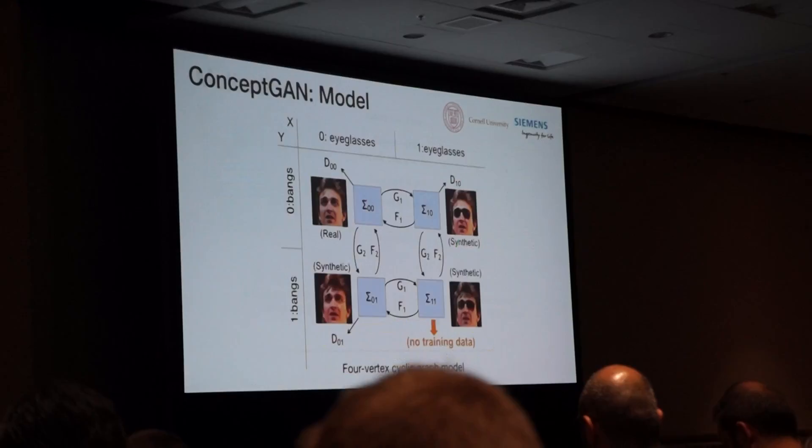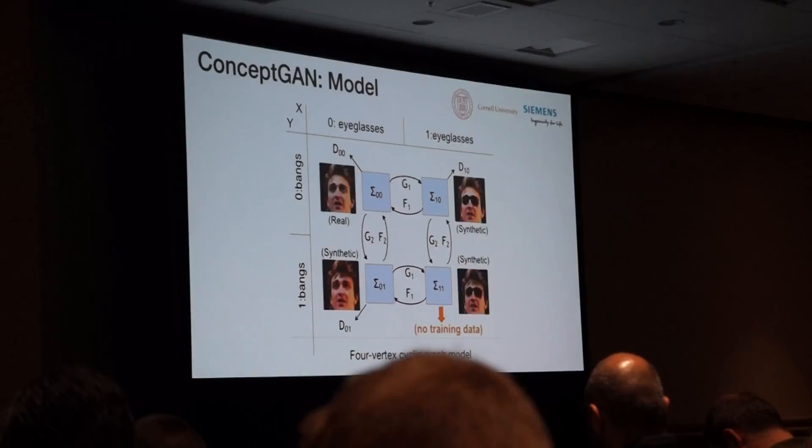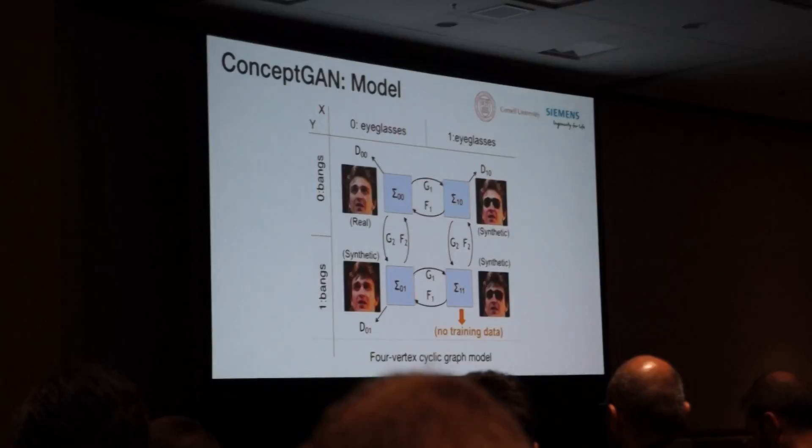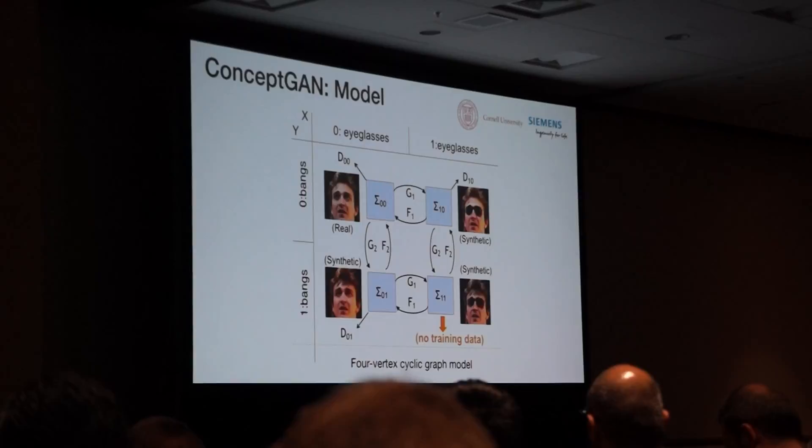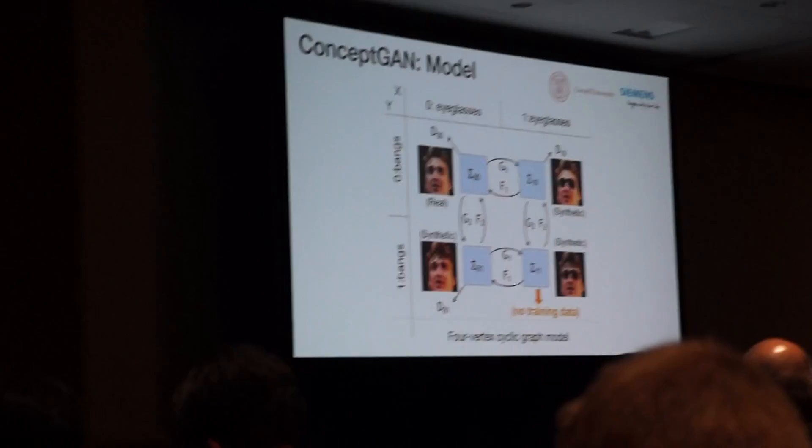The proposed concept GAN is modeled as a four-vertex cyclic graph, where a pair of concepts, each described as a set of forward and inverse mappings, are jointly learned between four subdomains of latent variations. In particular, no pairwise correspondence is required for data samples between any two subdomains, and our goal is to generate realistic samples over all four subdomains under the assumption that one of the subdomains has no training data.